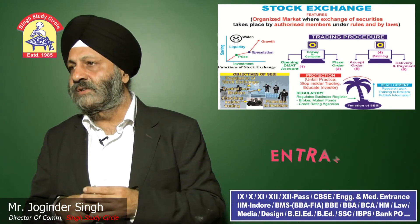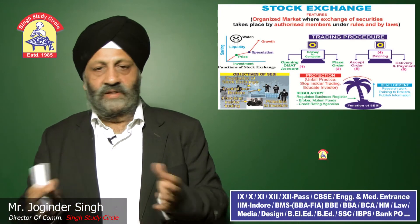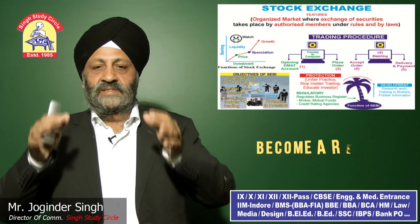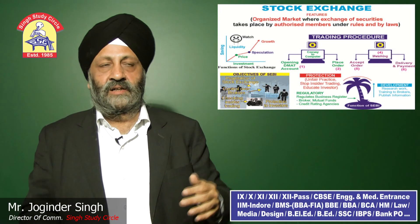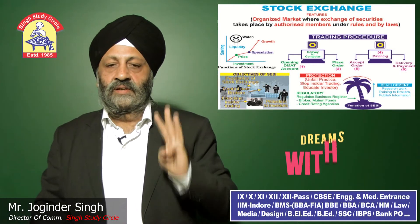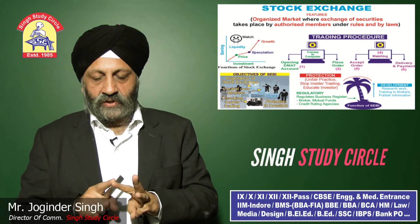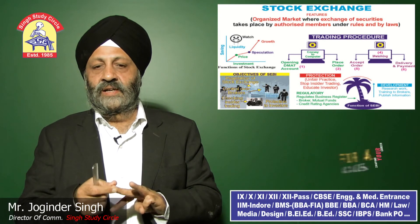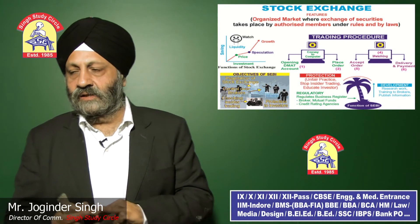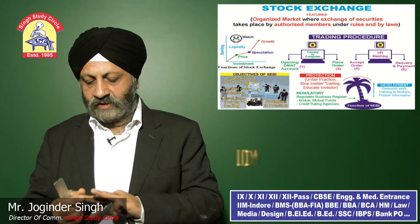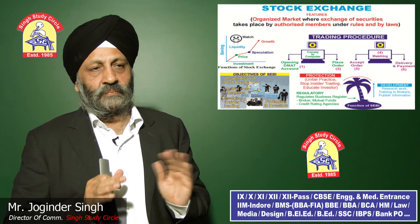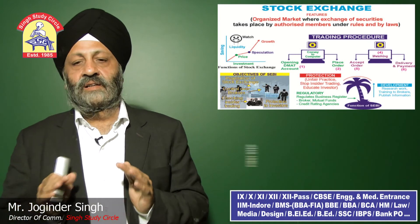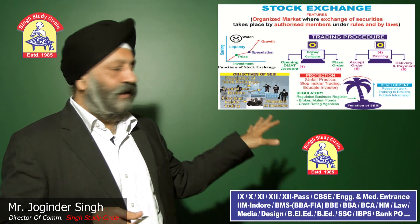The functions of SEBI are represented by a tree with three branches: development, regulation, and protection. Development includes conducting research, opening new branches, and publishing information. Regulatory function involves making rules and bylaws and registering all stock brokers and mutual funds. Protection involves protecting people from unfair practices, insider trading, and educating investors.